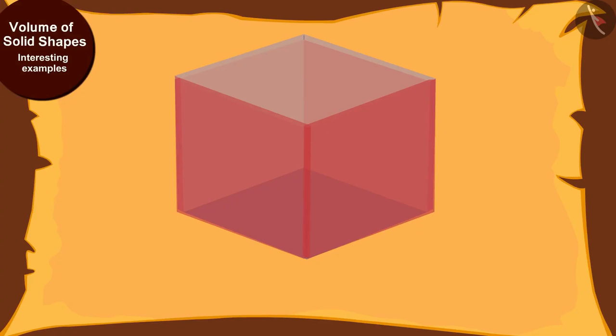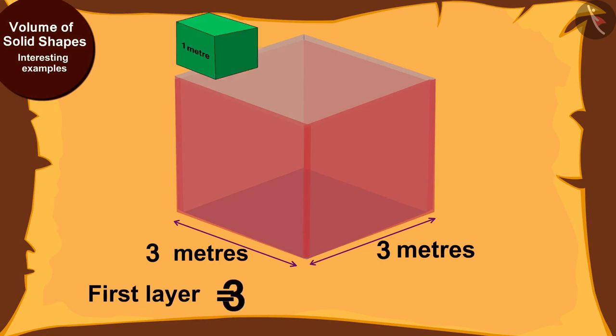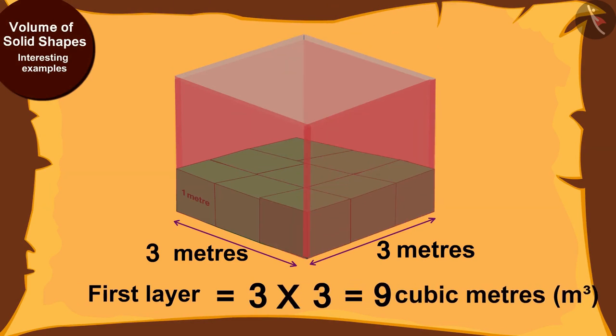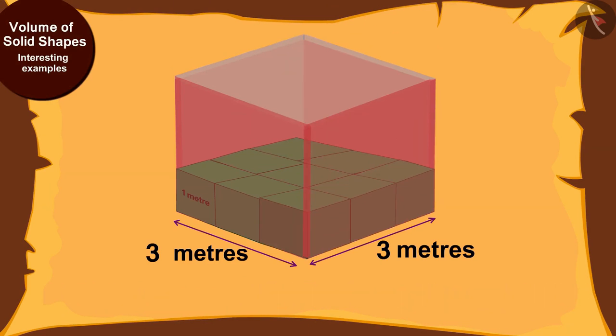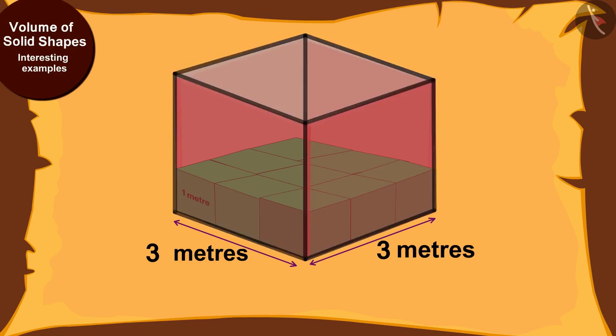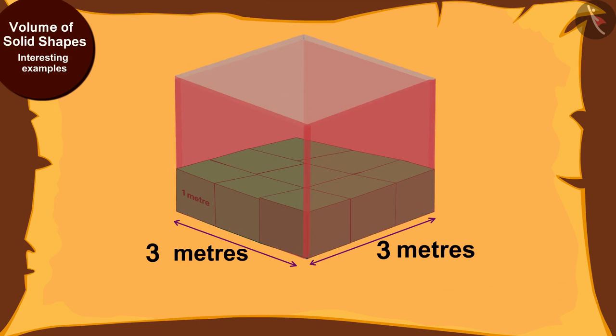The cube shaped house has a length of 3 meters. This means that the first layer of the house will have 3 times 3, 9 meter cubes. And because the house is cube shaped, its height will also be 3 meters.